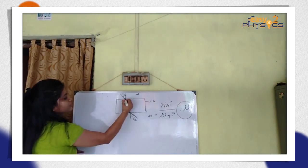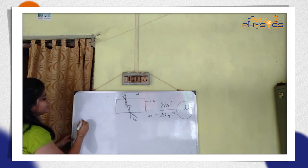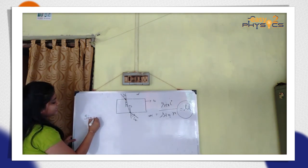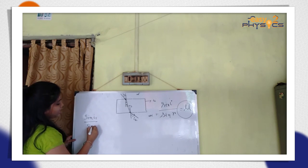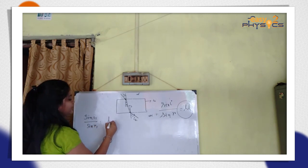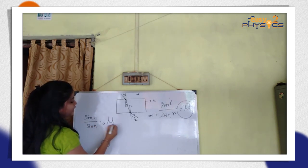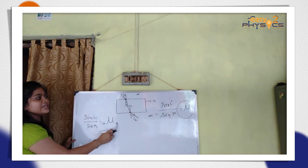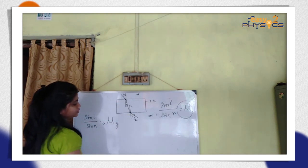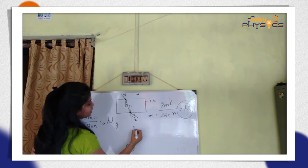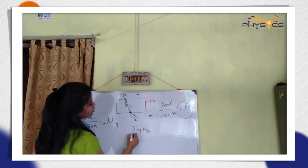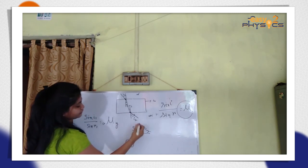A pointer is considered, so we will have sin i1 by sin r1. This is mu A2G — A2G means air to glass. Similarly, we will consider another pointer, so we will have sin i1 by sin r2. R is refracted, i2.